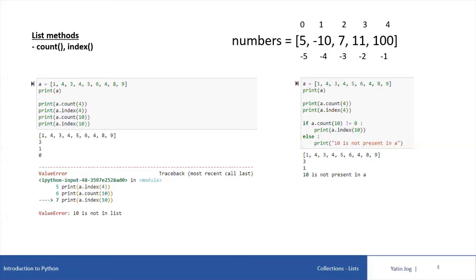In this video we are going to discuss two list methods: count and index. I'm declaring the list variable 'a' with values one, four, three, four, five, six, four, eight, nine. If I say print(a), it will print the whole list on the screen, as you can see in the output.